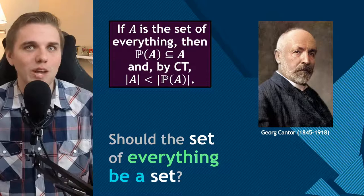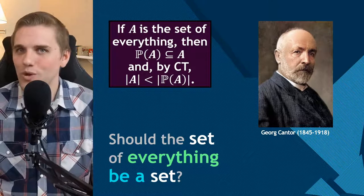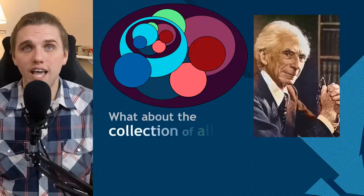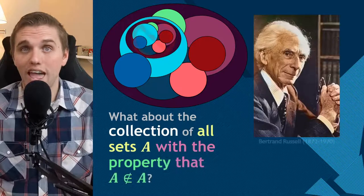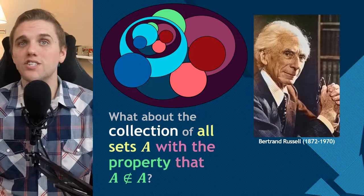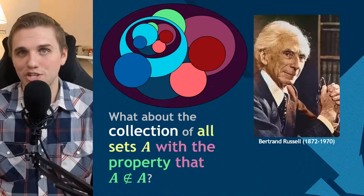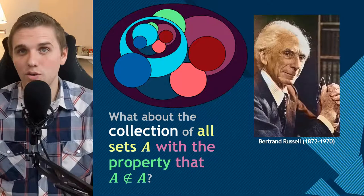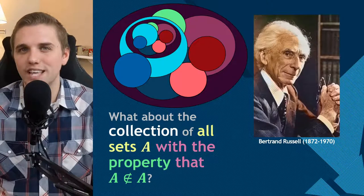So when do we run into trouble and how do we resolve these troubles? Shortly after George Cantor proved Cantor's theorem, Bertrand Russell discovered that it's problematic to have a collection of all sets with the property that A is not a member of itself. This discovery was the first time that mathematicians were convinced that you can't just unambiguously create a set from a property. Let's take a look at why Russell's paradox is a paradox.